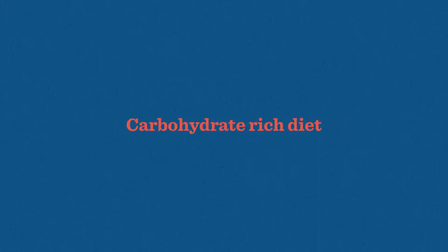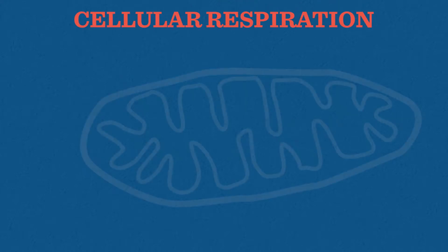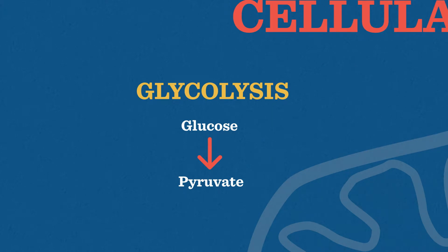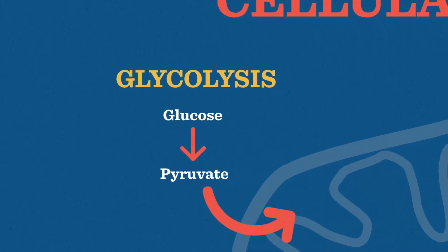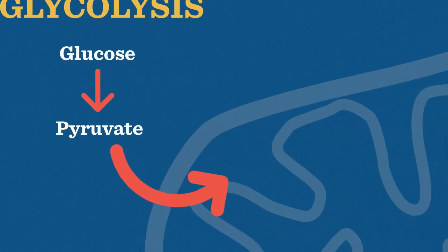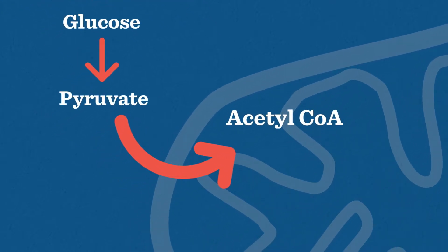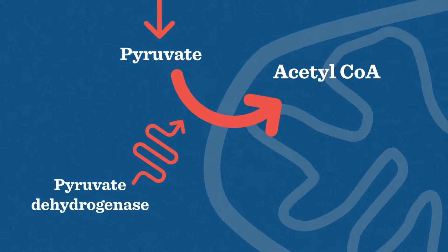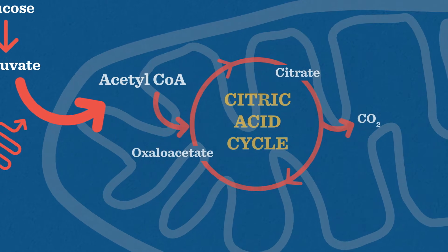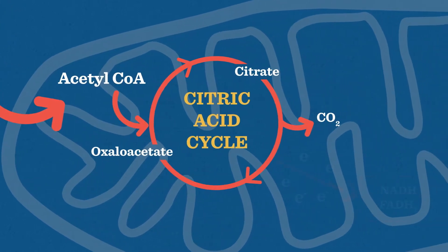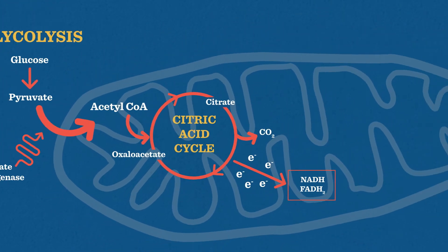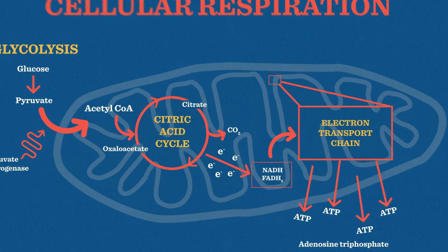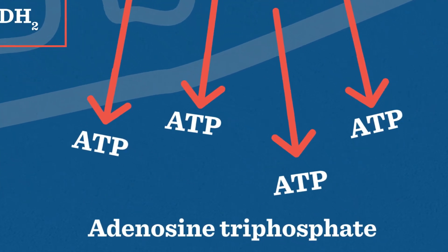When a person eats a carbohydrate-rich diet, cellular respiration starts in the cell's cytoplasm with the process glycolysis, where glucose is converted into pyruvate. The pyruvate then moves into the mitochondria where it's oxidized to acetyl coenzyme A by the enzyme complex pyruvate dehydrogenase. Acetyl-CoA is the starting material for the citric acid cycle, which reduces electron carriers ready for use in the electron transport chain, where the bulk of ATP is made.